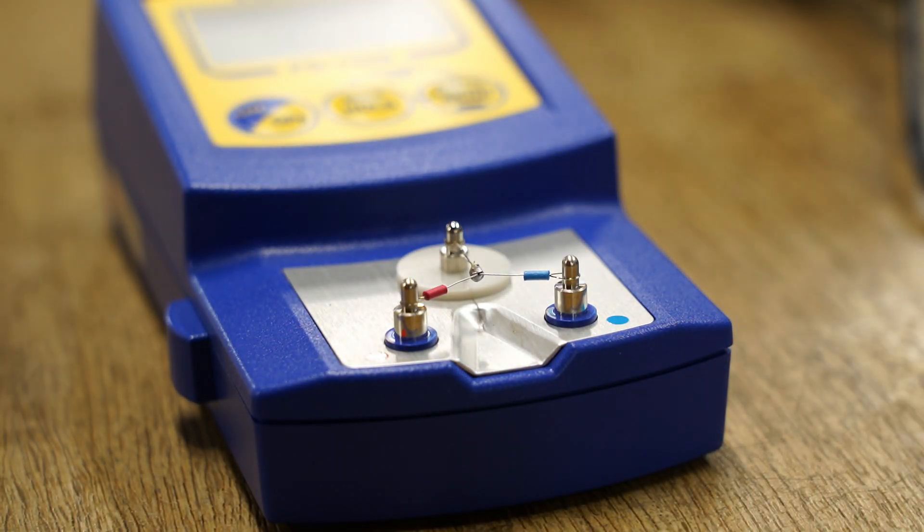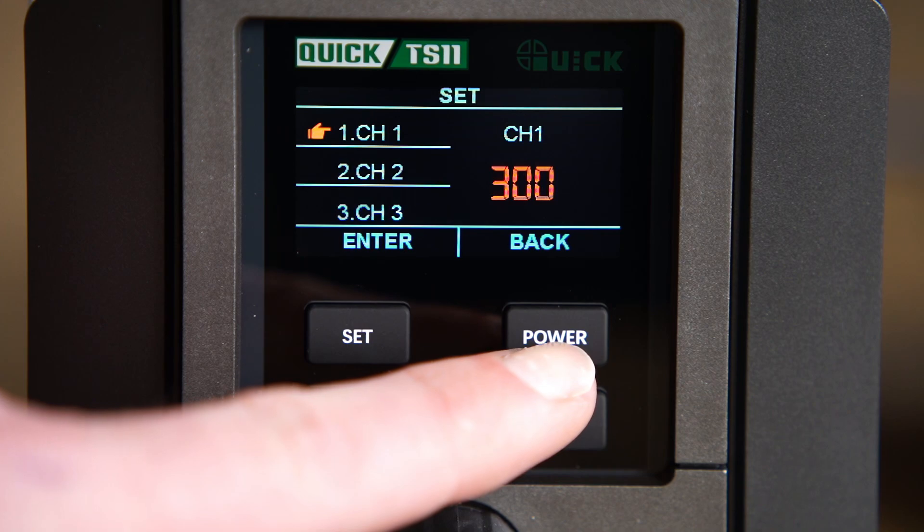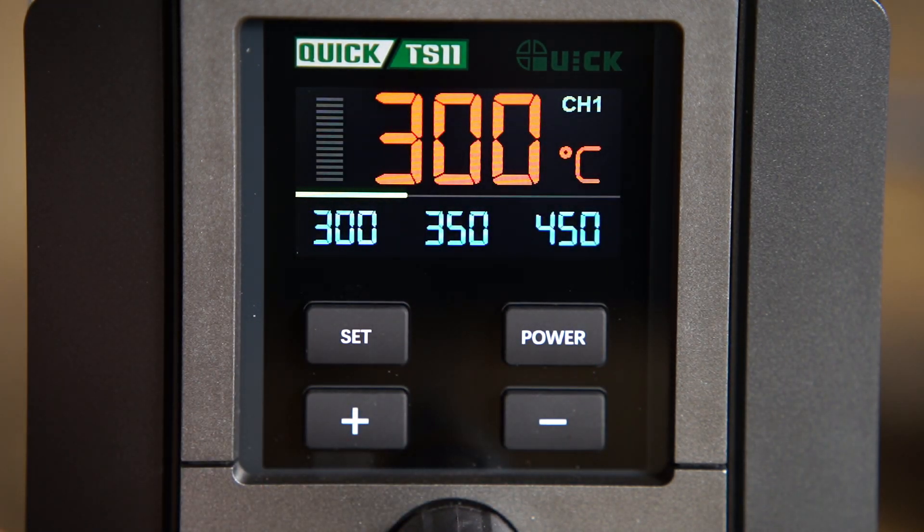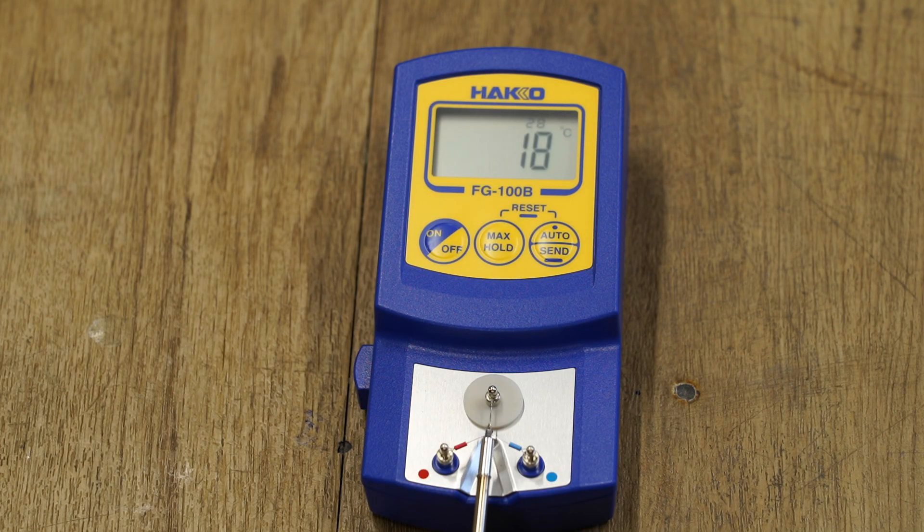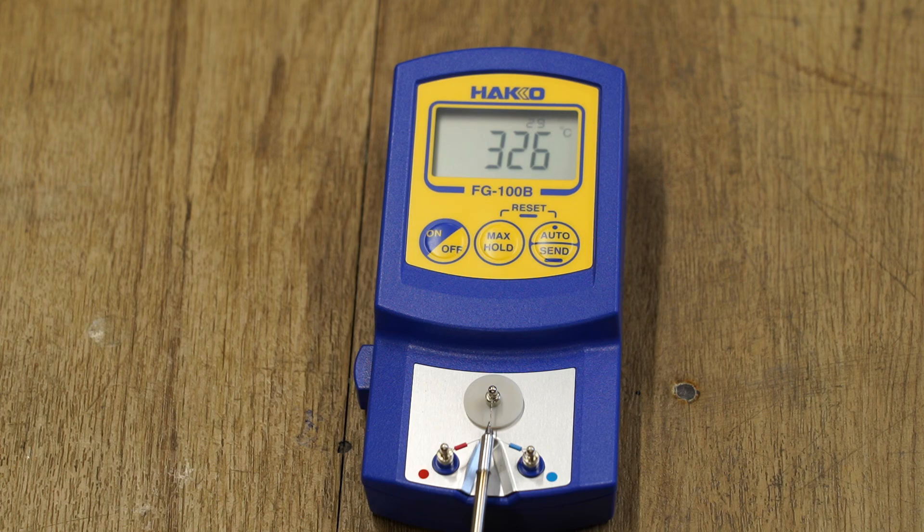Now let's investigate how precise the temperature control is using my Heiko temperature meter. At this point the station is uncalibrated and straight out of the box. With the station set to 300C, the actual tip temperature is about 25 to 30 degrees hotter, which is roughly a 10% margin of error. Far from perfect, but for this price point it's not terrible.